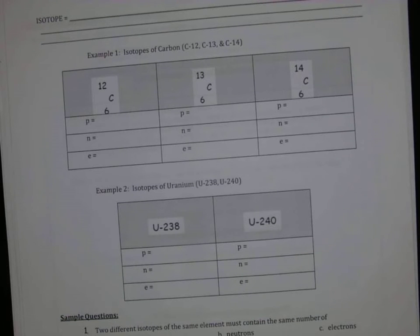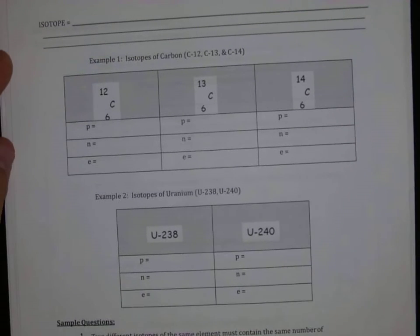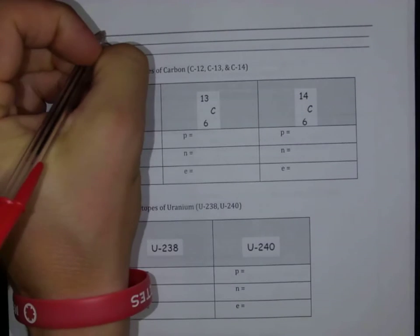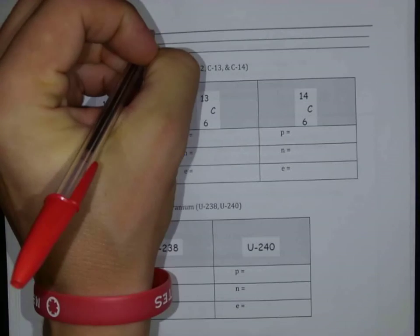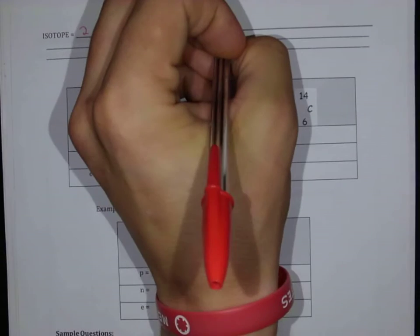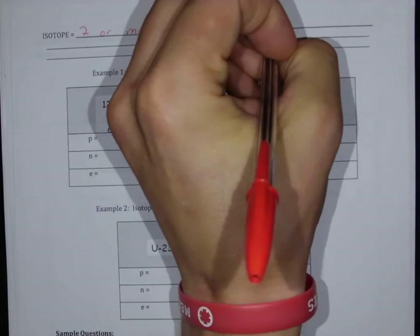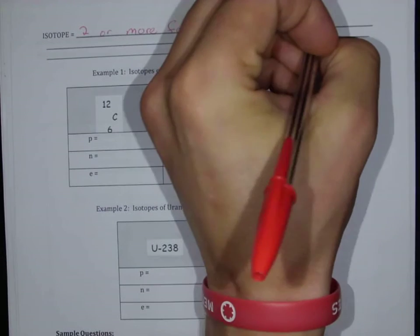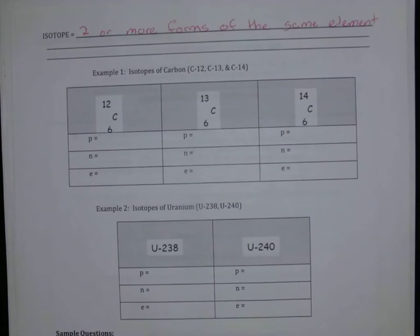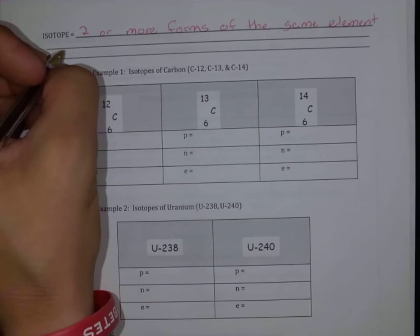All right, so now we're going to talk about isotopes. Isotopes are two or more forms of the same element, but they have differing numbers of neutrons.